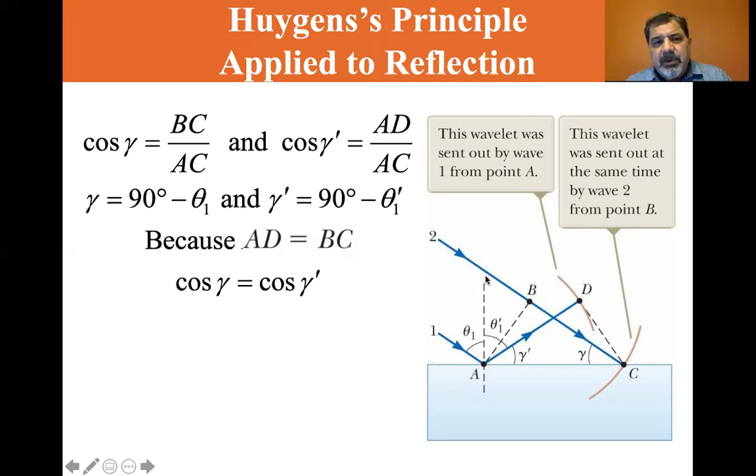Now these are congruent triangles because they both share the same hypotenuse, AC. So you've got a triangle ABC and you've got a triangle ADC, and you can see they both share AC as their hypotenuse.